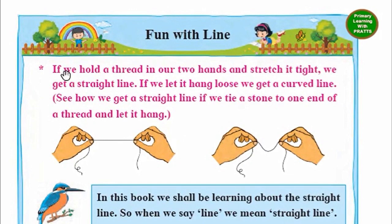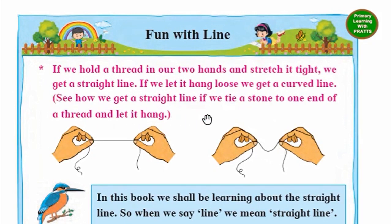Let's read. If we hold a thread in our two hands and stretch it tight, we get a straight line. If we let it hang loose, we get a curved line. See how we get a straight line if we tie a stone to one end of the thread and let it hang. Now in this book we shall be learning about the straight line.